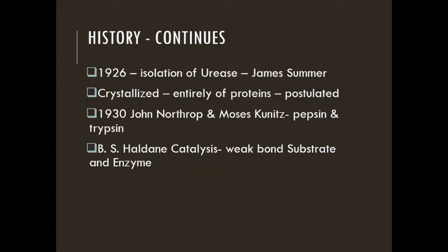Sumner's conclusion remained controversial for a long period, and it was only widely accepted in 1930. This was because John Northrop and Moses Kunitz crystallized another enzyme — pepsin — and also trypsin, and isolated other digestive enzymes. They found that pepsin, trypsin, and other digestive enzymes consist only of proteins, thus proving that all enzymes are proteins.